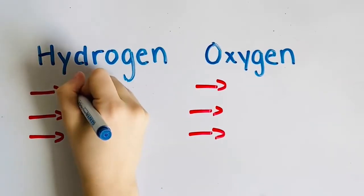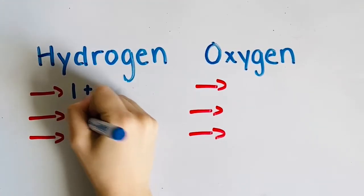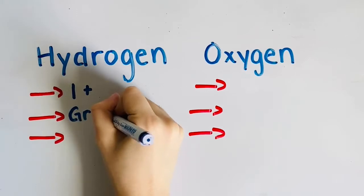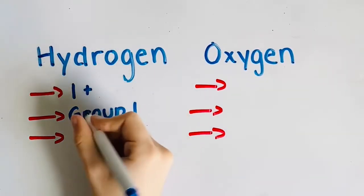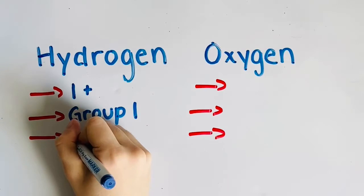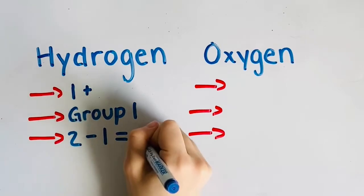First, we need to explain how we found its formula. Hydrogen has a charge of positive one. We know this because hydrogen is found in group one of the periodic table. Hydrogen is a special case where it requires only two electrons to complete its valence shell. Two minus one is one, therefore it needs one electron.